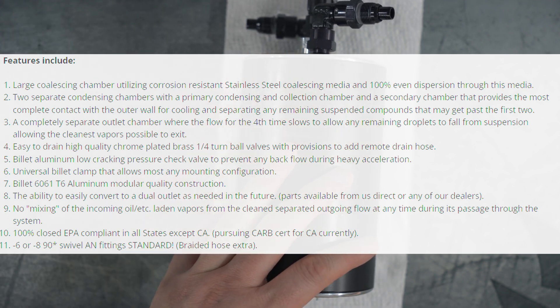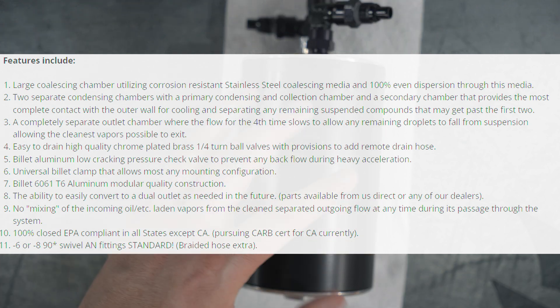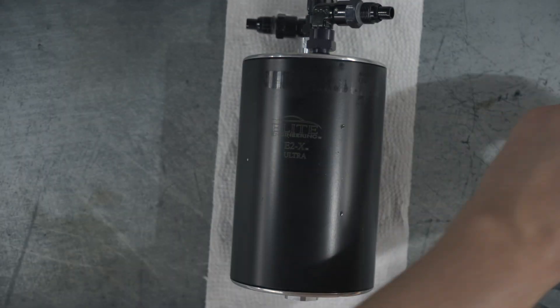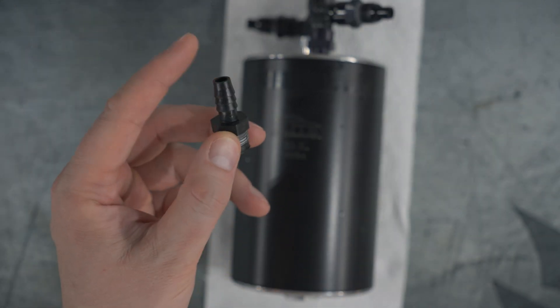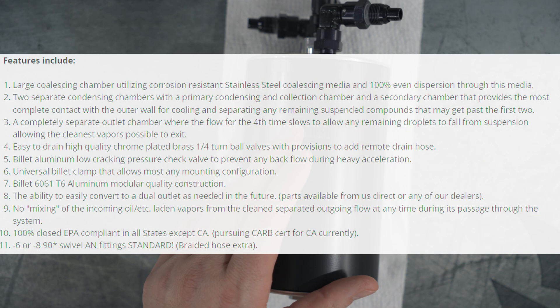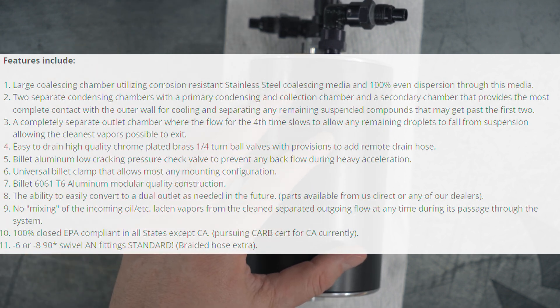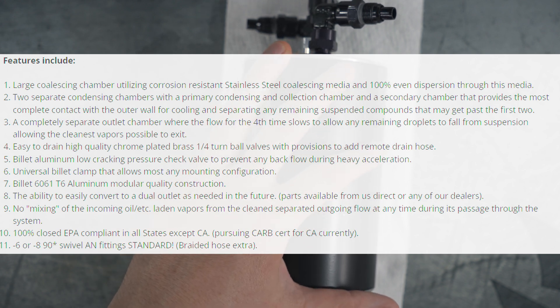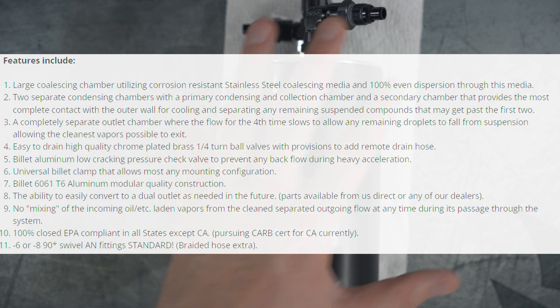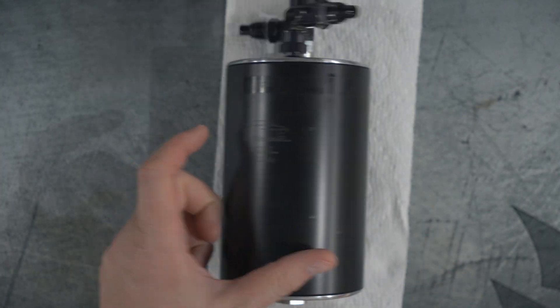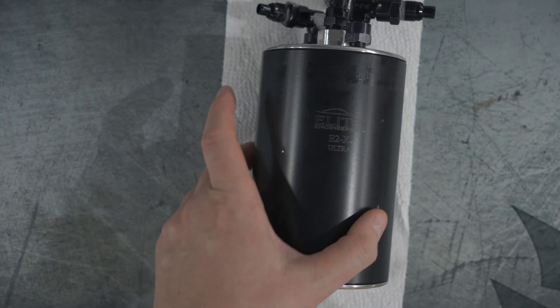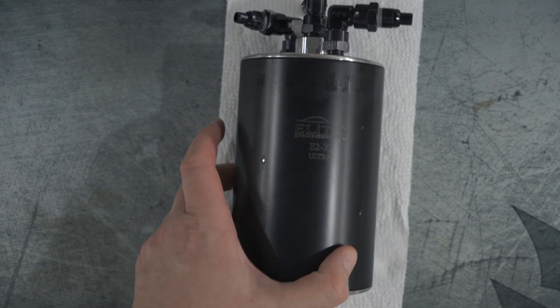It's easy to drain using a high quality chrome plated brass quarter turn ball valve and you can actually hook up a remote tube to drain it from below your car through the grill or whatever. This is the drain valve and this is the provided hose barb fitting that allows you to hook your drain hose right here. Now we have a billet aluminum low crankcase pressure check valve and I actually have those installed in my car. You have a universal billet clamp that allows most of any mounting configurations. You have a billet 6061 T6 aluminum modular quality construction. That's what this thing is made out of. Super nice, durable. Only negative I would say is the paint scheme is kind of not the greatest. It's actually worn in a few spots for me and it looks kind of ugly, but overall the construction itself is super nice and holding up great after three years of use.